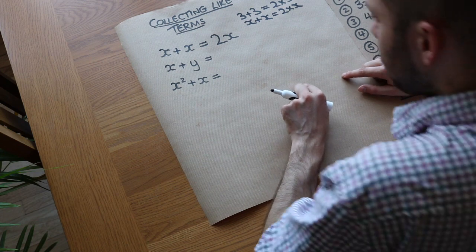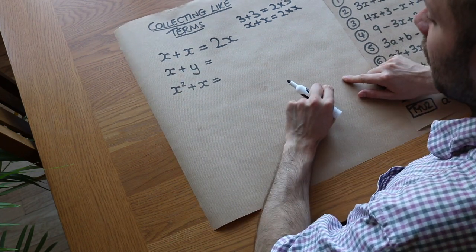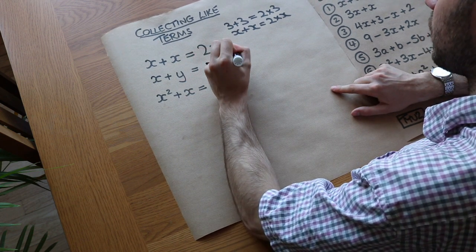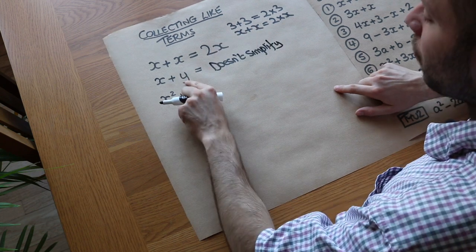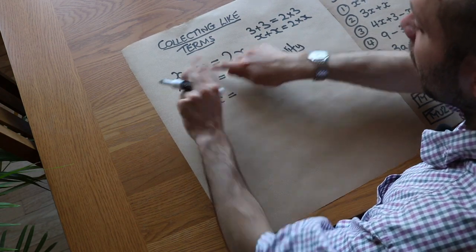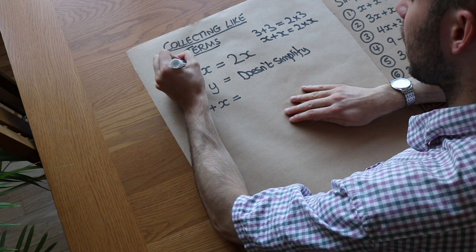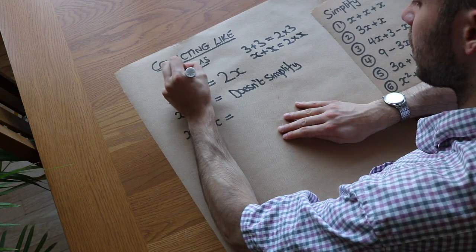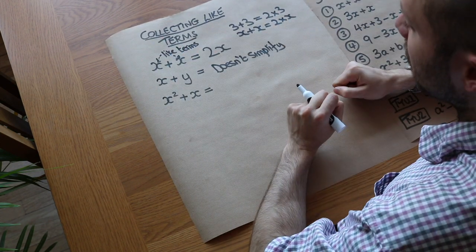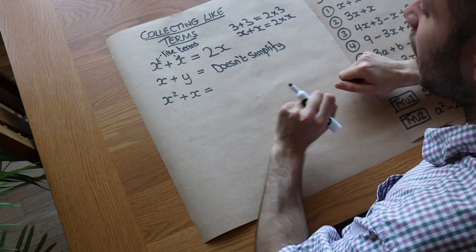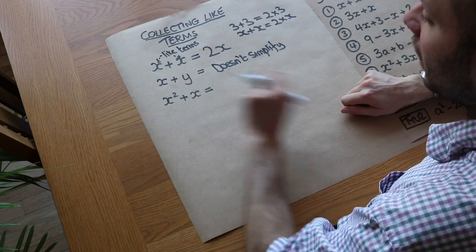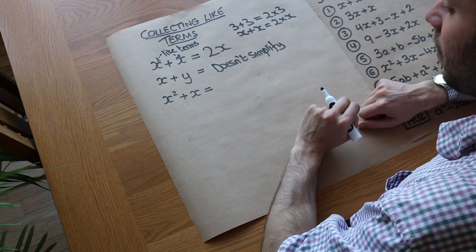Now this one's actually a bit of a trick question. We've got x plus y — can we simplify that? The answer is no, it doesn't simplify. The reason is that x and y are not what we call like terms. x and x are both the same kind of thing, they're in the same family, and we call them like terms. You can only combine terms together — we say we collect those terms — if they are like terms. x and y involve different variables, so they're not like terms and we can't collect them together.